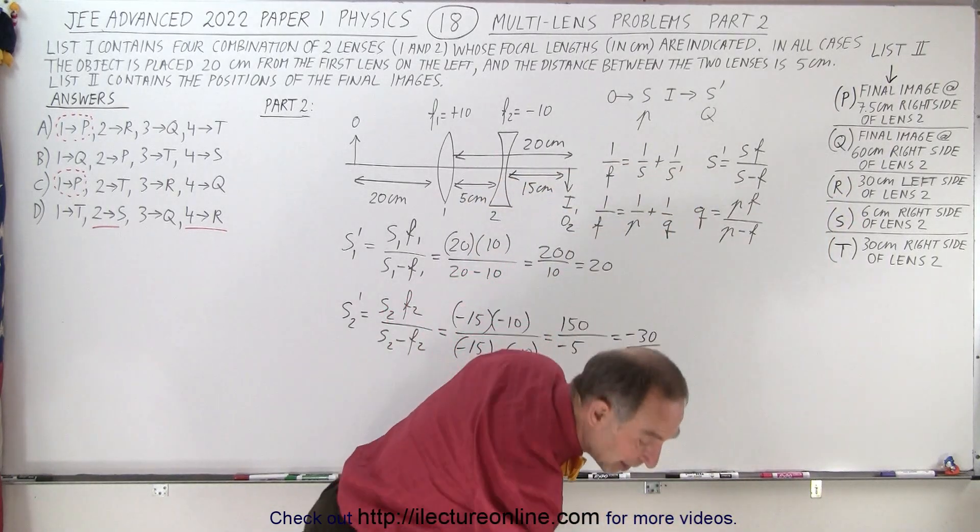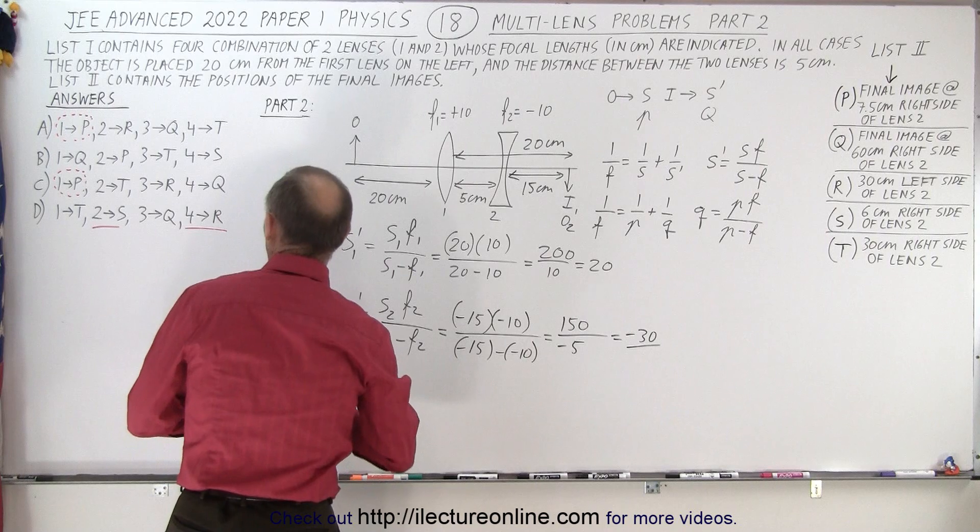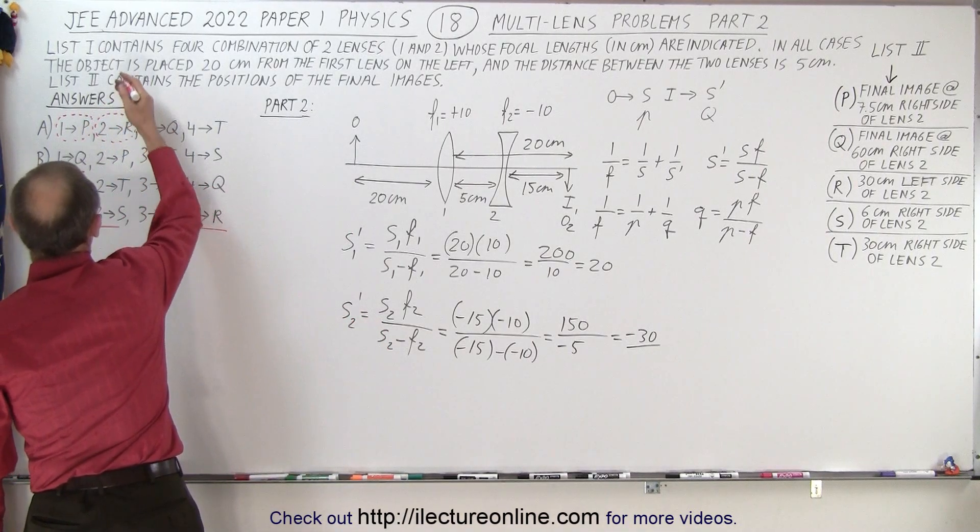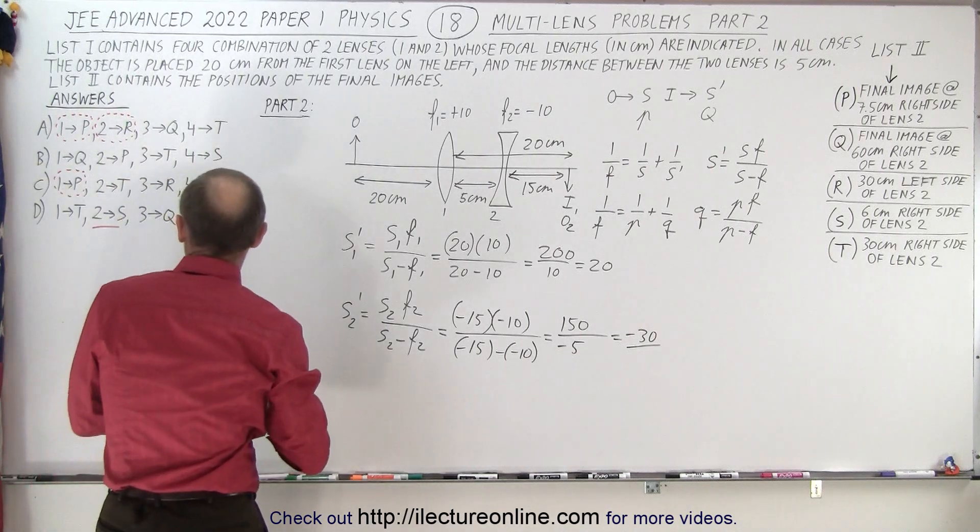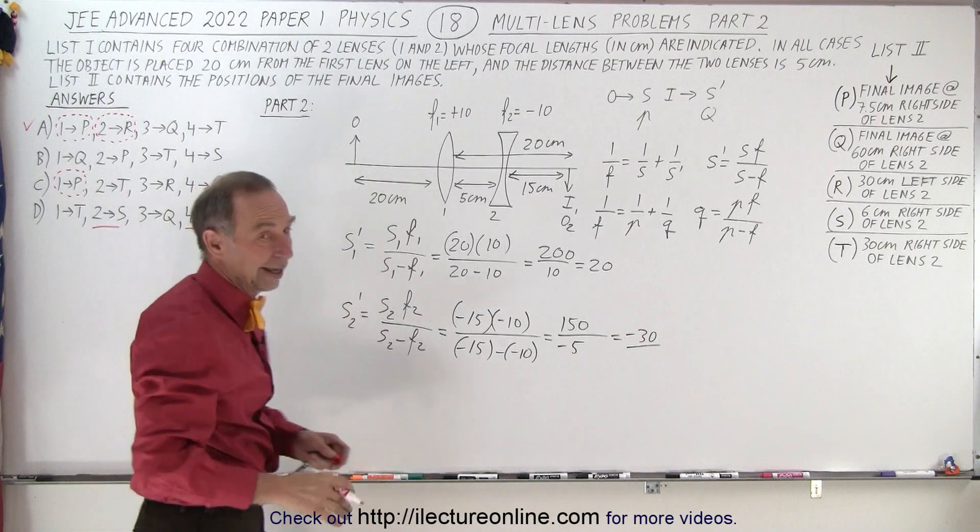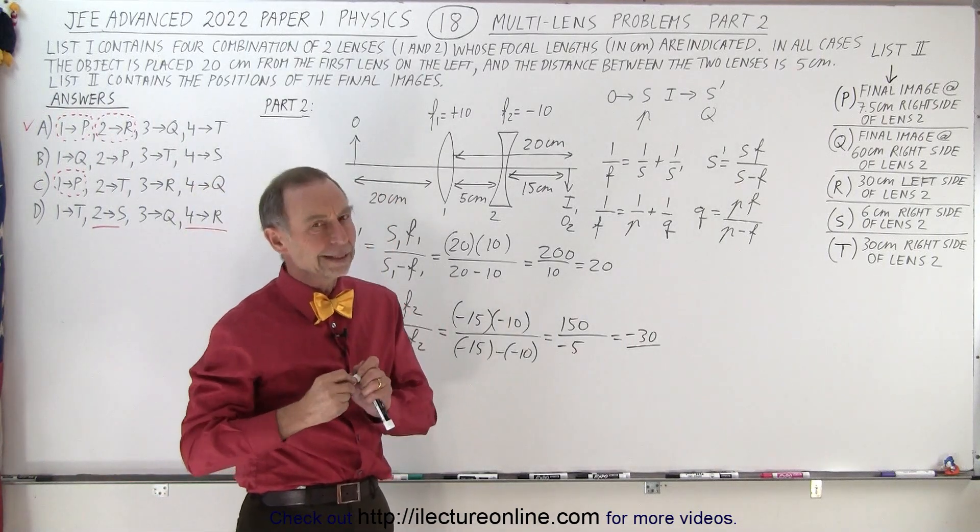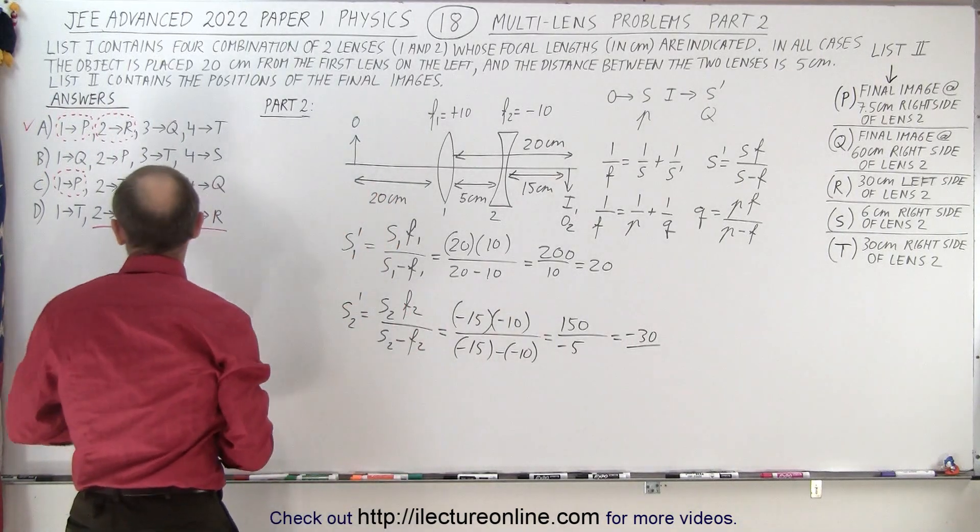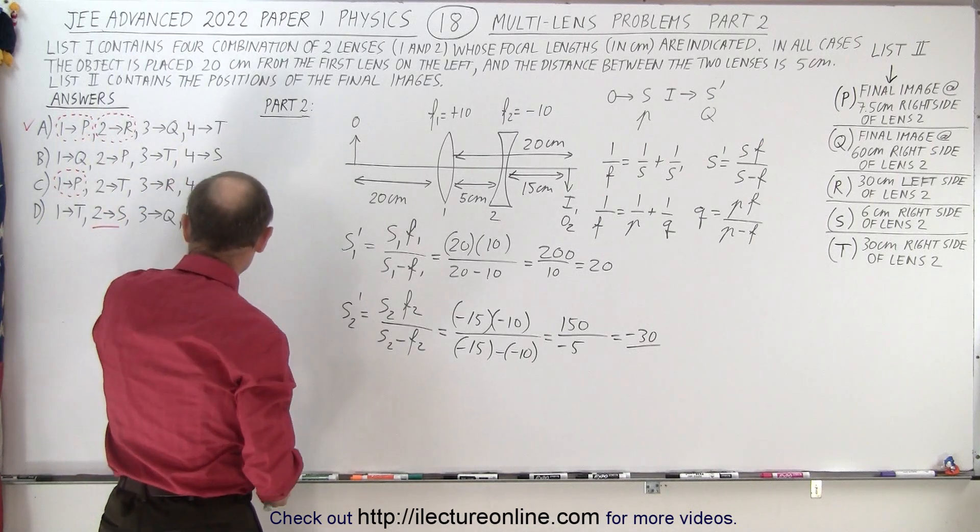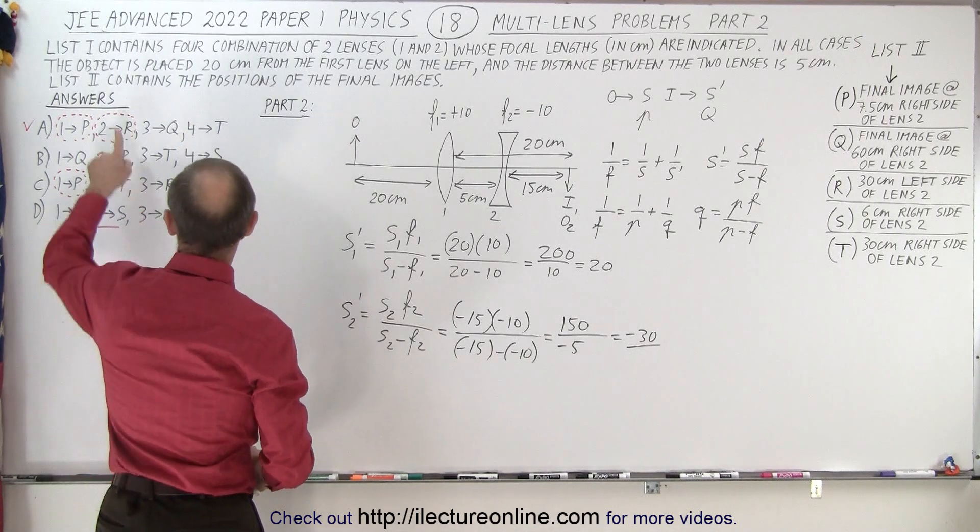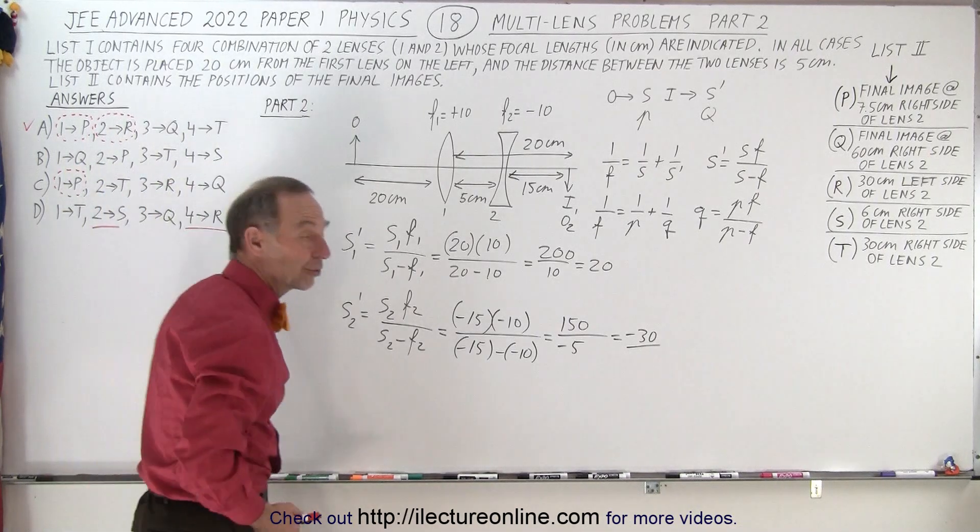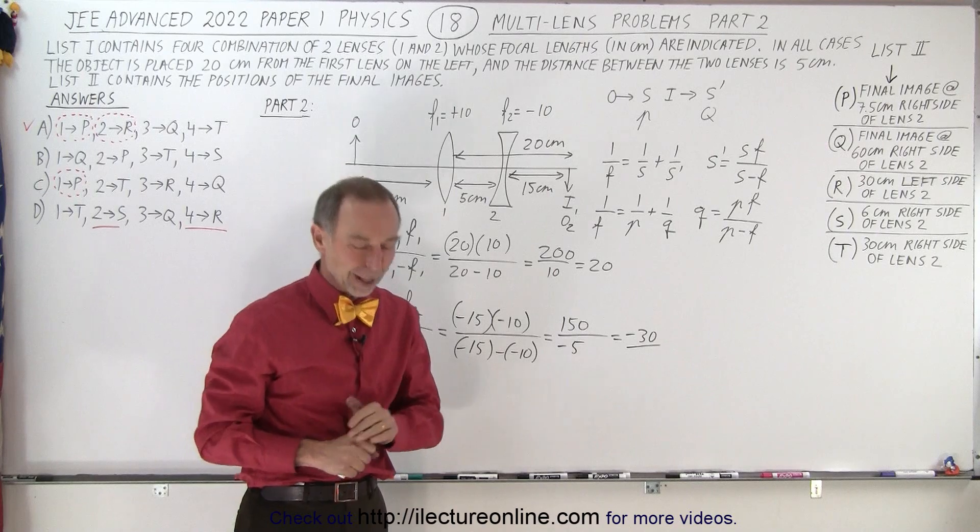So therefore we can say that for part 2, R is the correct answer which puts us right here. And there's only one option here that has R. And so conclusively we can say that A is the correct answer. And then we move on. Now again as I said you probably don't want to do part 1 first. You want to do part 2 first or part 4 first because each of the answers are different. So as soon as you get the correct answer you know what the answer is and you can move on to the next problem.